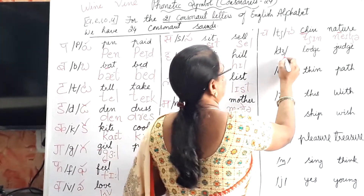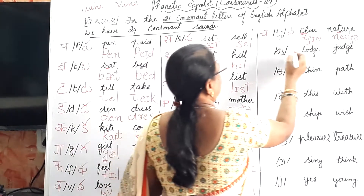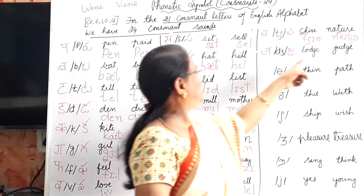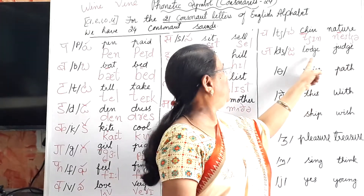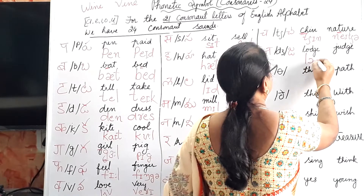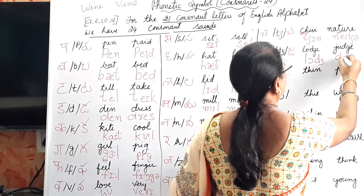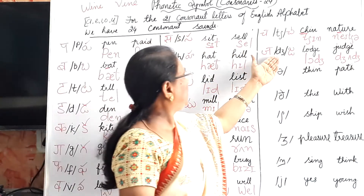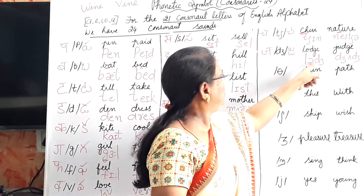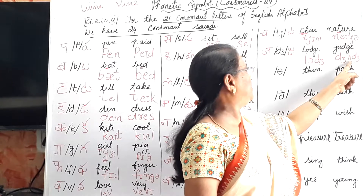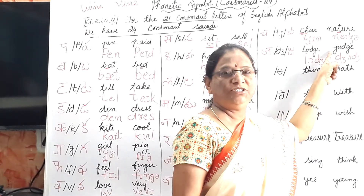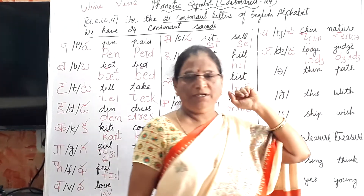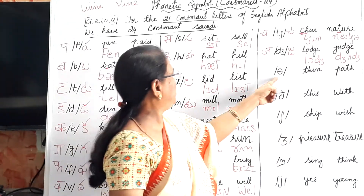This is the /dʒ/ (ja) sound. Large, judge. In 'large,' O gives the /ɑː/ sound. In 'judge,' U gives a different sound. We Indians pronounce it as 'judge' — but it is not 'judge,' it is 'dʒʌdʒ.' The D is silent at the end. It is 'judge,' not 'judge.'